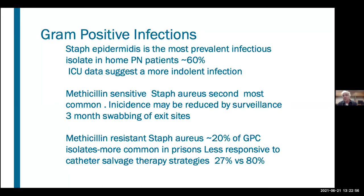ICU data suggests Staph epi is a more indolent organism — often the line can be saved with antibiotic therapy. Methicillin-sensitive Staph aureus is the second most common and may be reduced by surveillance and swabbing of exit sites. Methicillin-resistant Staph aureus is the least common but is a more difficult infection to treat. We see more of it in our prison populations; it's less responsive to catheter salvage strategies and is a more aggressive infection.